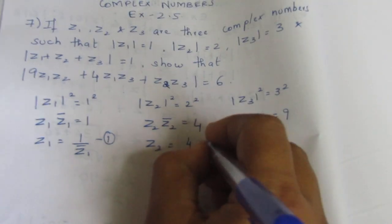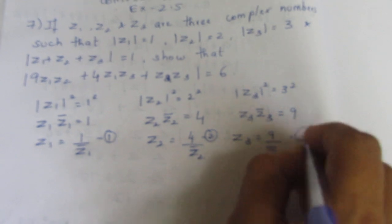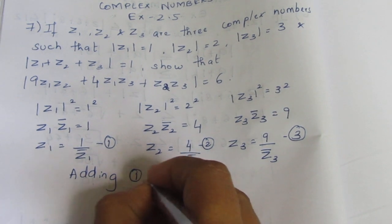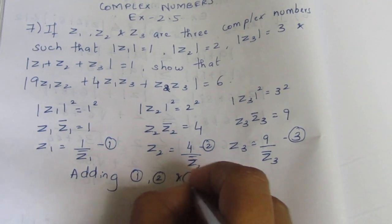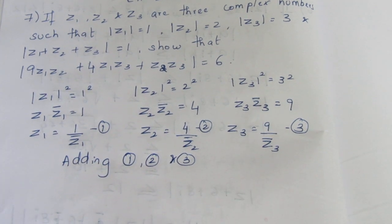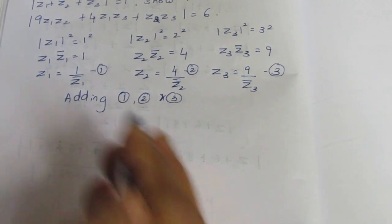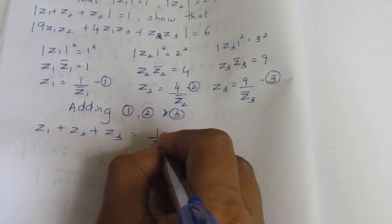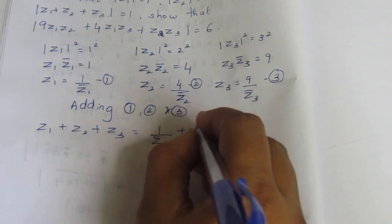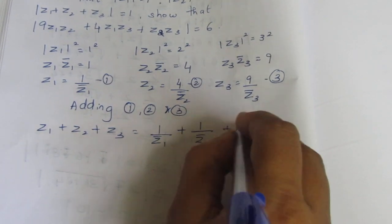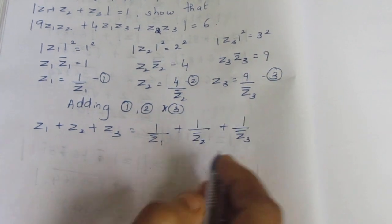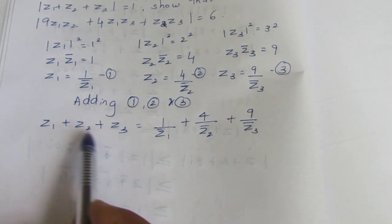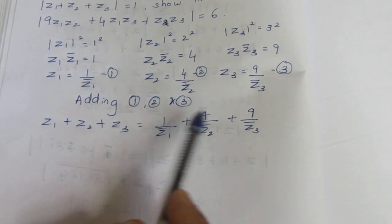Adding equations 1, 2 and 3. Adding LHS with LHS, RHS with RHS. So Z1 plus Z2 plus Z3 equals 1 by conjugate Z1 plus 1 by conjugate Z2 plus 9 by conjugate Z3.